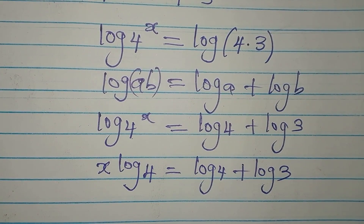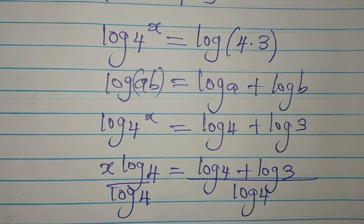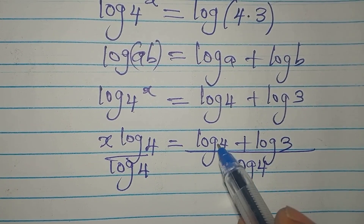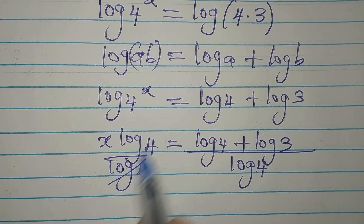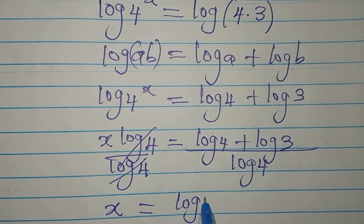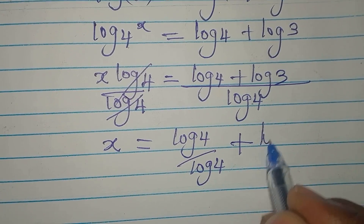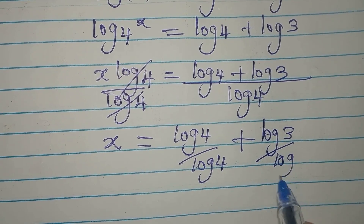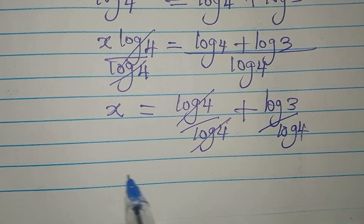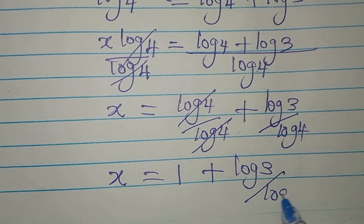Now divide both sides by log 4 so that x will be free. This log 4 cannot cancel across both numerators at once, so x equals log 4 over log 4 plus log 3 over log 4. Since log 4 divided by log 4 is 1, we have x equals 1 plus log 3 divided by log 4.